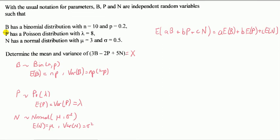I'm given three variables: binomial, Poisson, and normal. We'll ask to find the mean and the variance of this linear transformation of those three random variables. Let's call that X, the new variable.